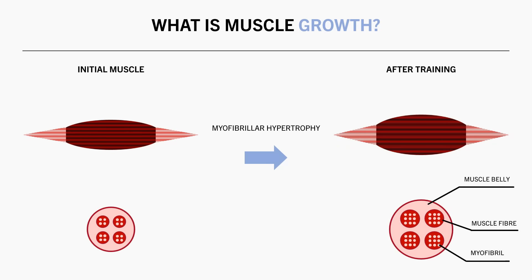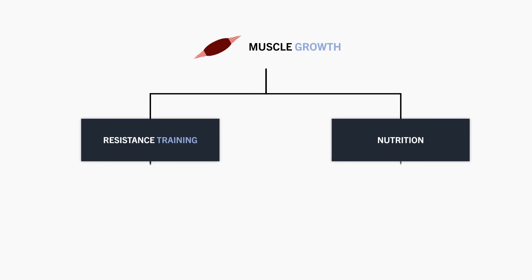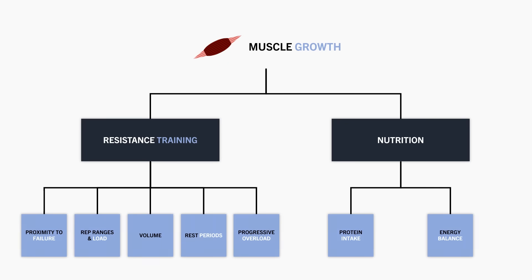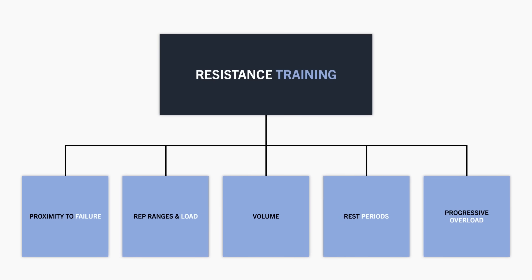So, how do we achieve this adaptation? There are two primary factors which can promote muscle growth: resistance training and nutritional strategies. Let's first discuss resistance training, because it is the number one priority for building muscle.